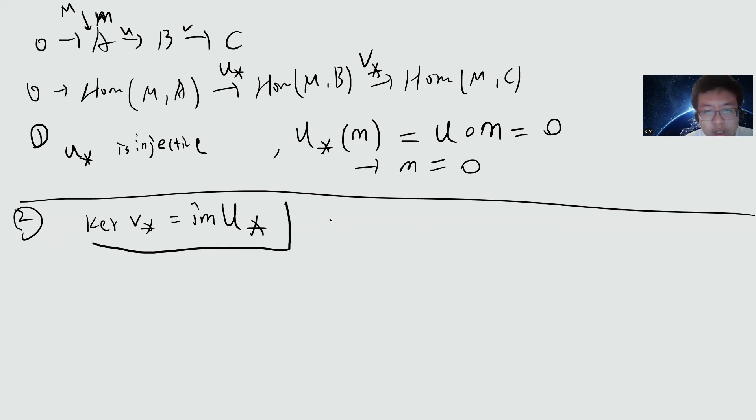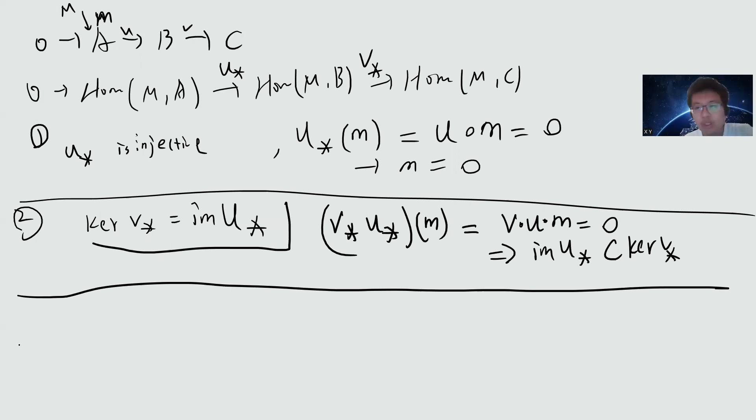The reason is that we can see that if we take V* on U*(m), and then I got some m, that will become V circle U circle m, which is zero. So this tells you that the image of U* is a subset of kernel V*. So this direction is simple. Let's prove another direction, which is a little bit tricky. Let's test your understanding of algebra.